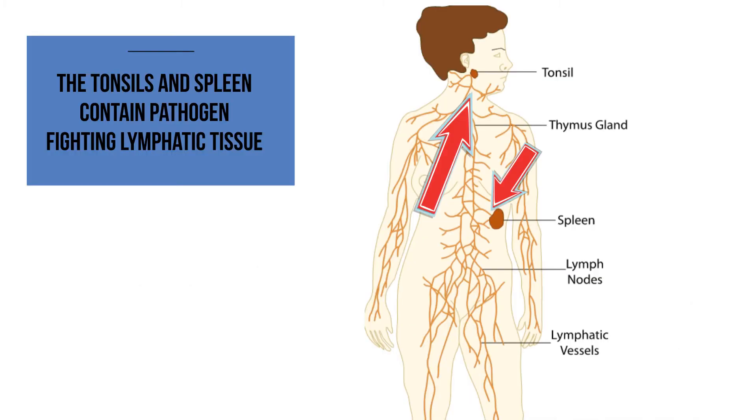Lymphatic tissue is also found in other parts of your body, including your tonsils, spleen, intestinal walls, and bone marrow.